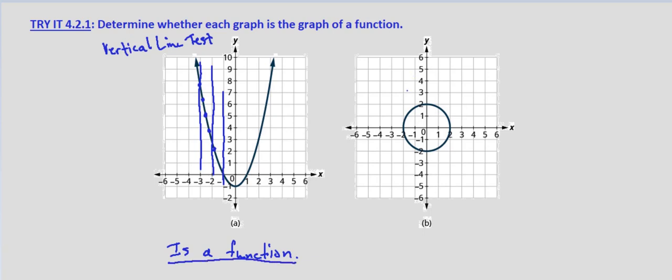Now with part b, we have a circle. If you look on here, there are multiple points on this graph. Or if we draw a vertical line, we intersect that circle in more than one place.